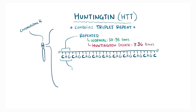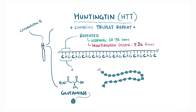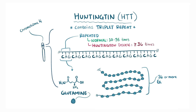CAG codes for the amino acid glutamine, so people with Huntington disease will have 36 or more glutamines in a row in the Huntington protein. So, in addition to being a triplet repeat disorder, HD is, more specifically, a polyglutamine disease.